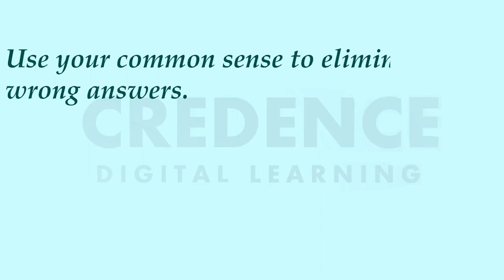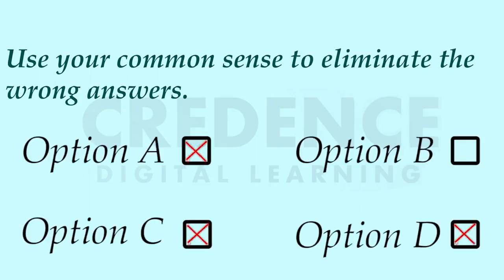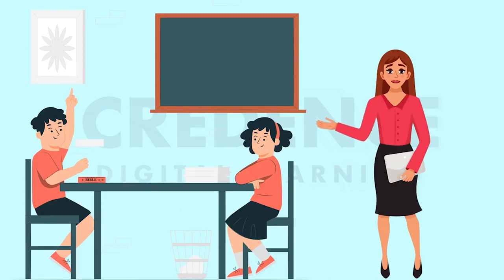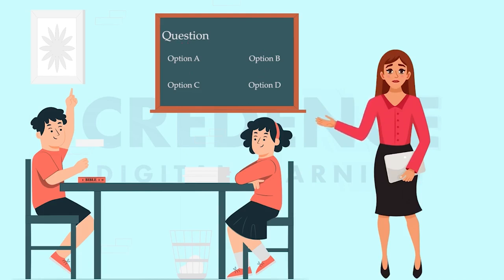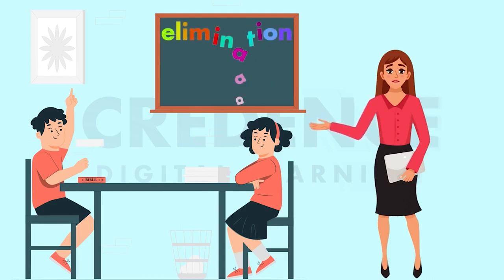You should use your common sense to eliminate the wrong options. For class 12, the unseen passages are not going to be so easy — you will feel as if all four options are correct. In smaller classes, three options are completely wrong and one is right, so it is easy to find the correct answer. But for higher classes all four options appear correct, so you have to choose the best out of the four. This is why you can do the process of elimination — cut those options which appear to be totally wrong.